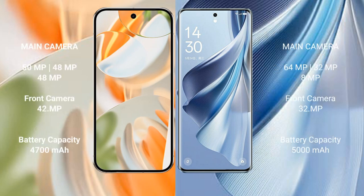Google Pixel 9 Pro rear has a triple camera setup: 50MPx, 48MPx, 48MPx. The front camera is 42MPx.